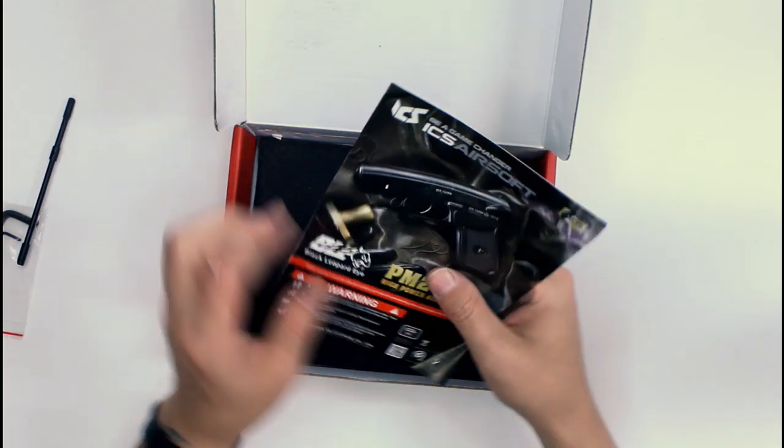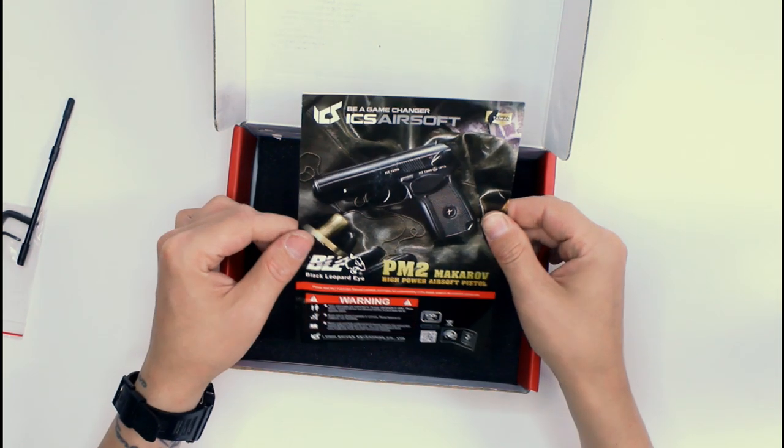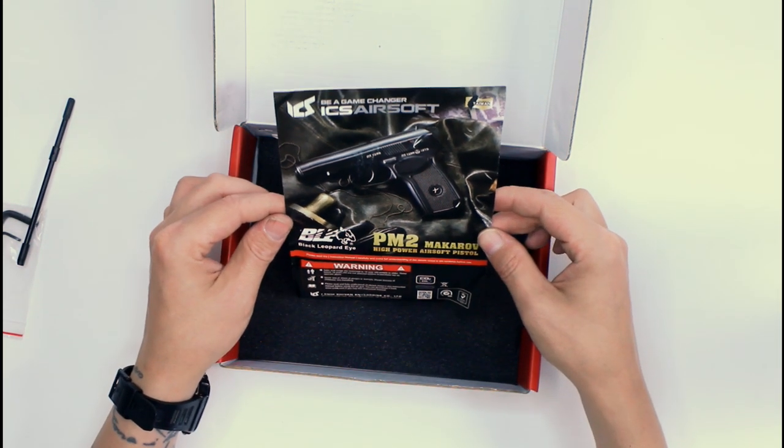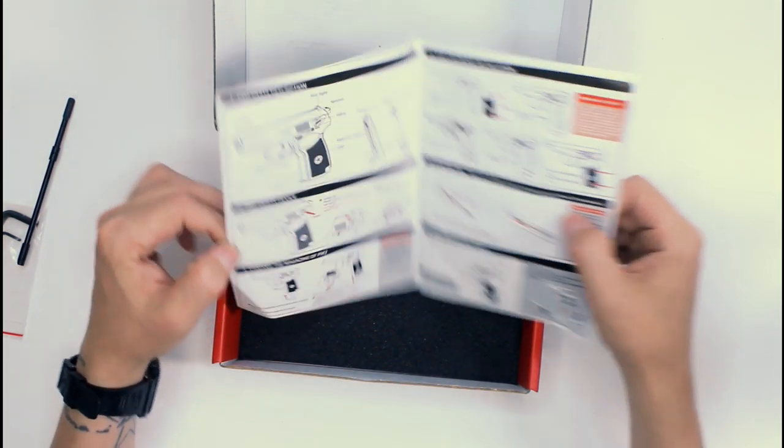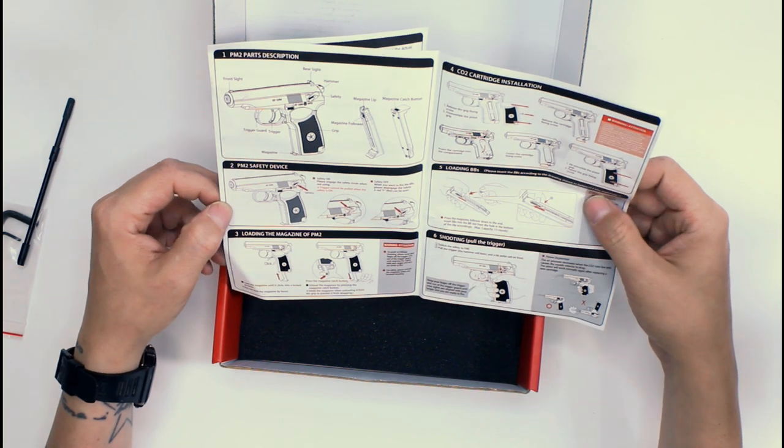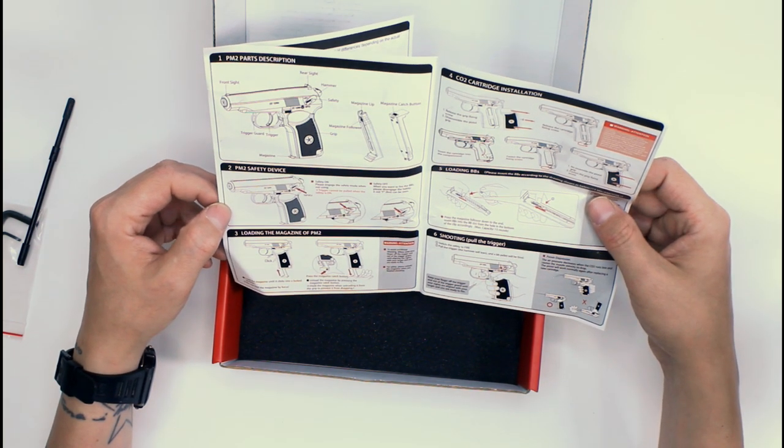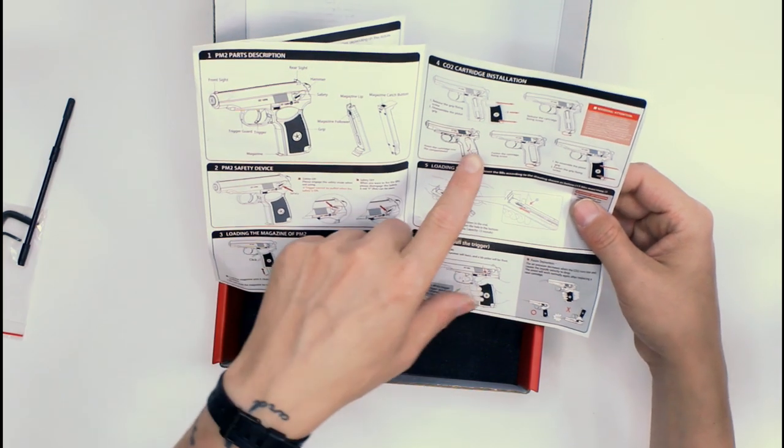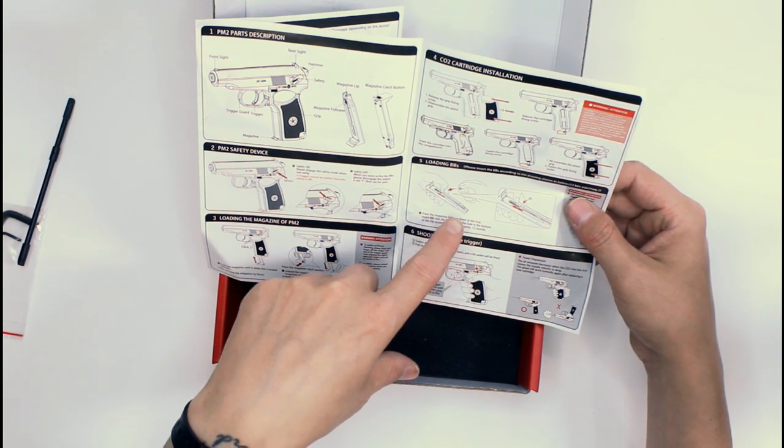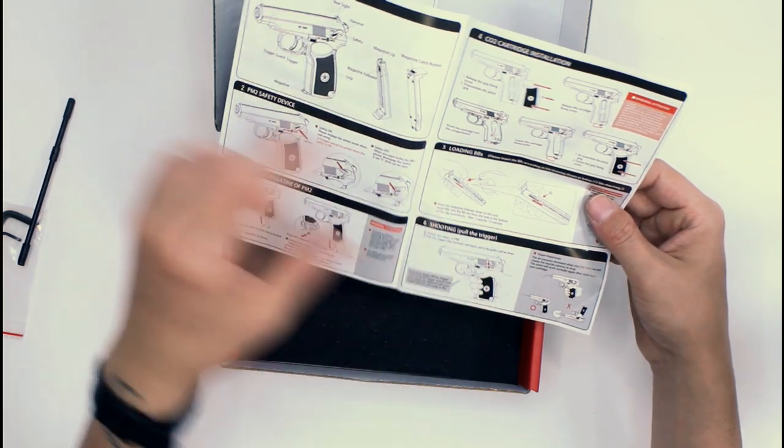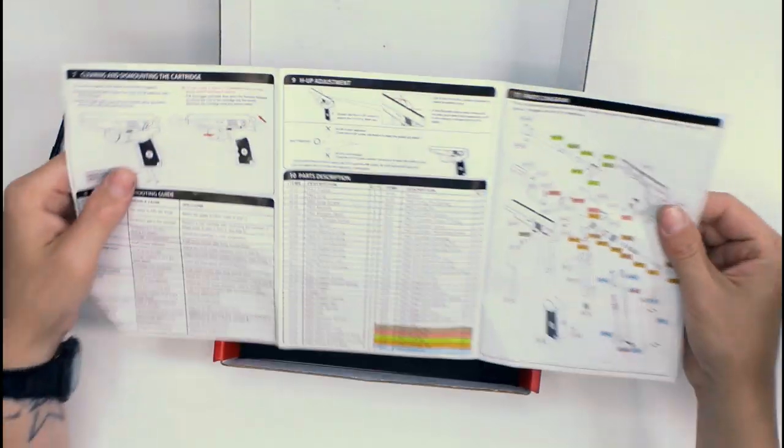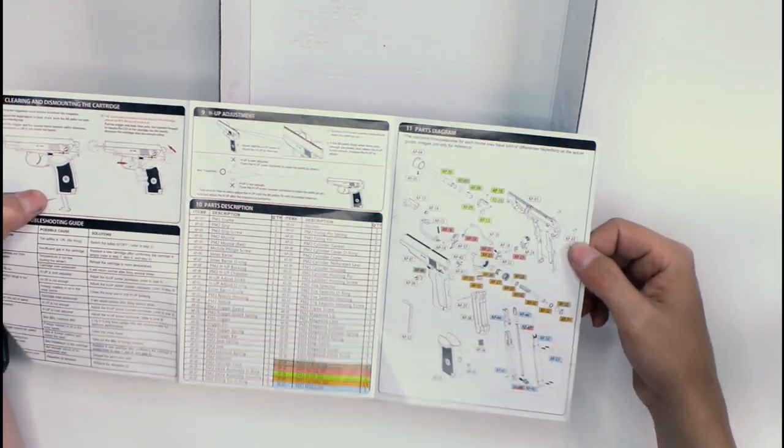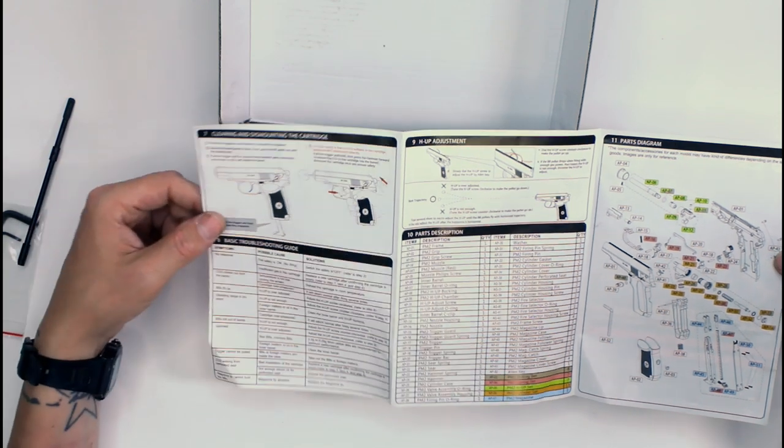Then the instruction manual. A little quick look at the instructions: the PM2 Makarov high power airsoft pistol, Black Leopard Eye. So inside, a little breakdown on all the parts, where the safety is, how to insert the magazine, how to change the CO2, how to load the magazine, how to shoot, which is useful. And then on the other side we've got the breakdown and the schematics, the parts diagram of the pistol and all parts descriptions and basic troubleshooting guide.